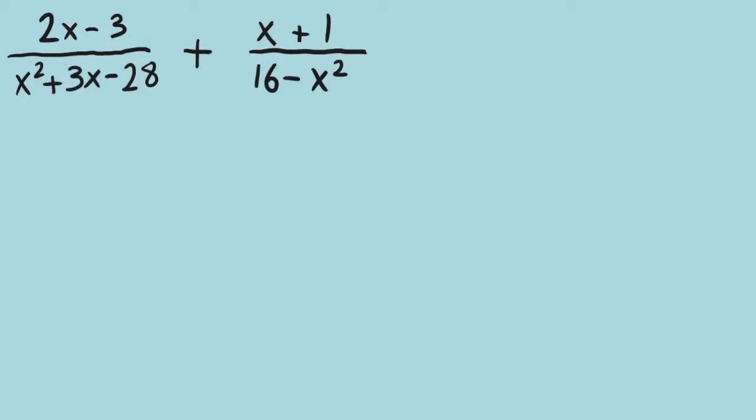Let's continue with another example where we might see some opposites at work, which will hopefully clarify what we were trying to describe about opposites from the last example. We see two fractions to add that have different denominators, so finding a common denominator is up first. To do that, we will factor each denominator.